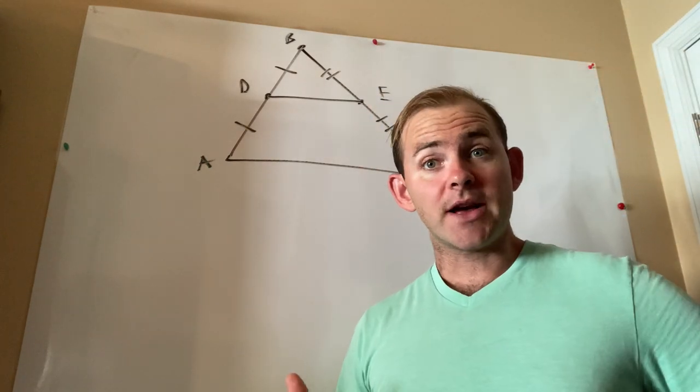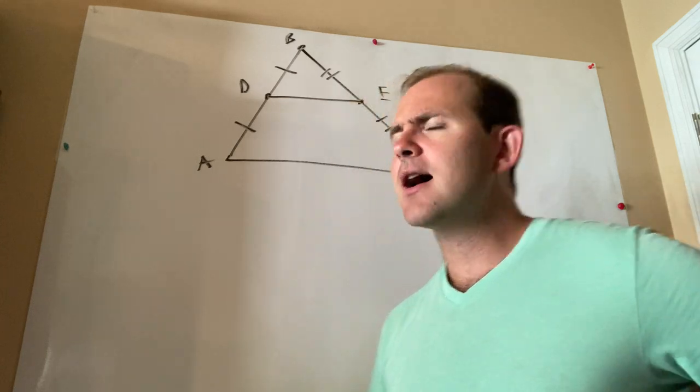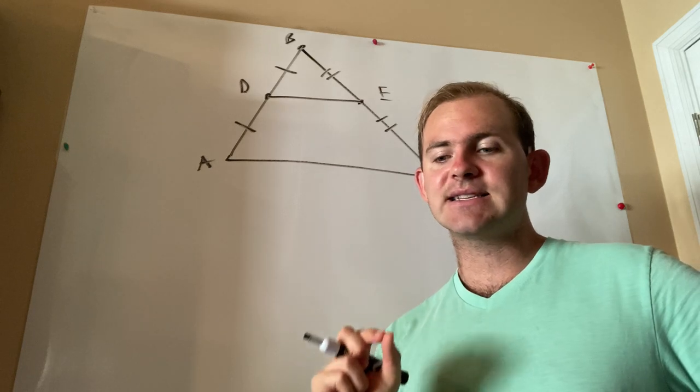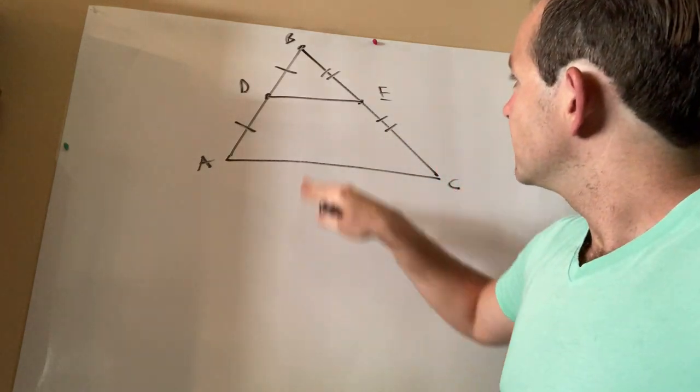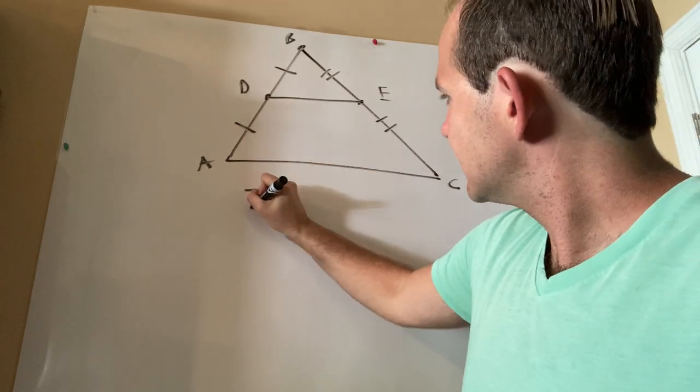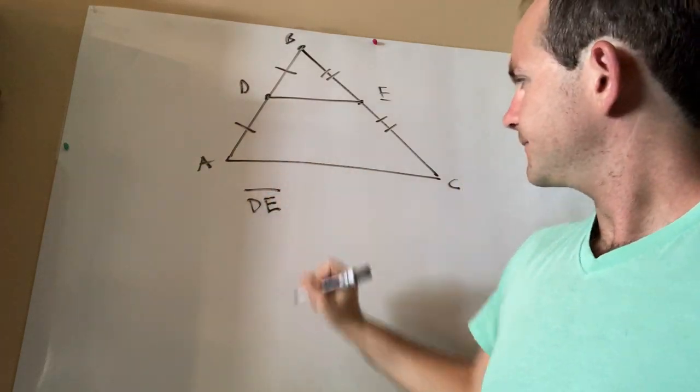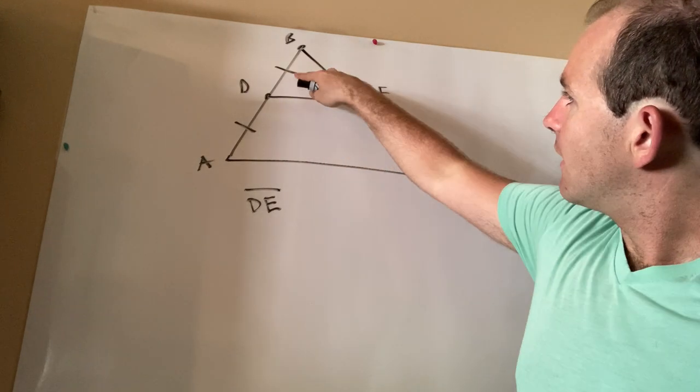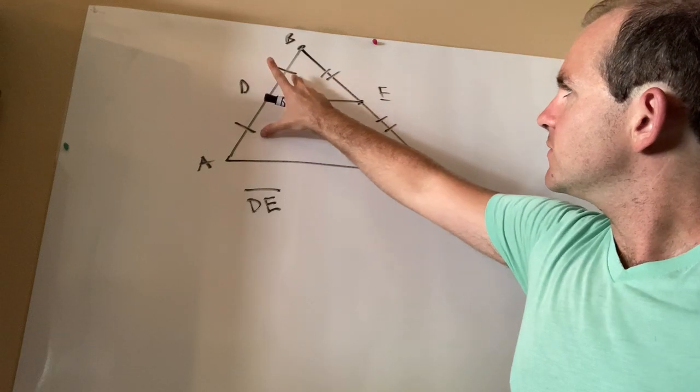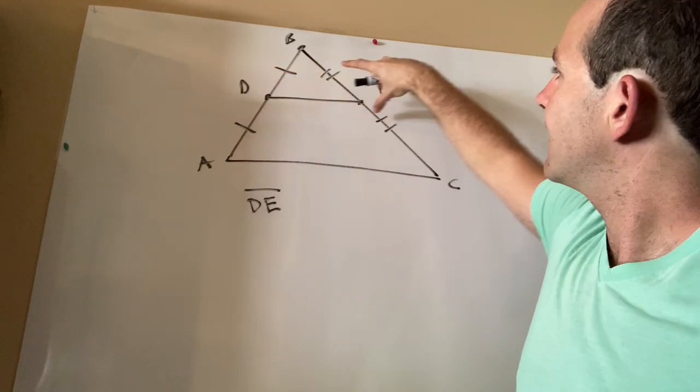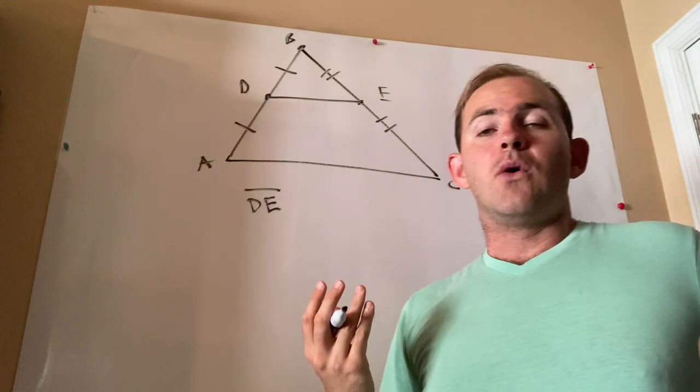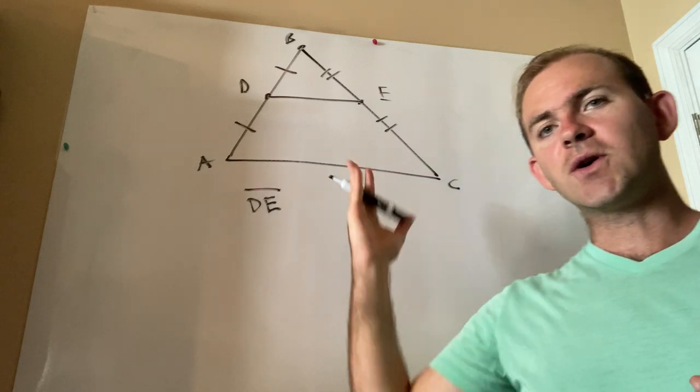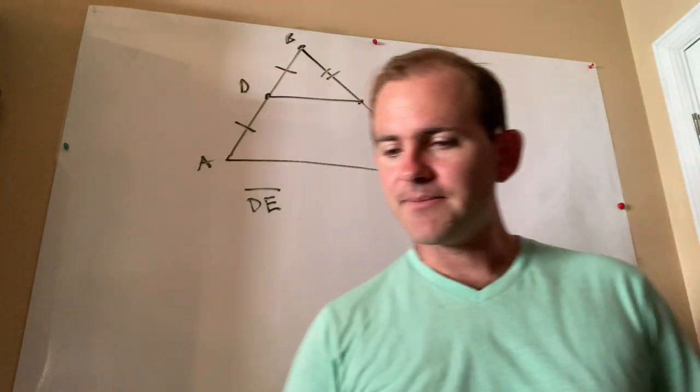We would say that a mid-segment of a triangle is a segment connecting the midpoints. Let me say that again. A segment connecting the midpoints of the two sides. So in this diagram right here, an example of a mid-segment would be DE. The way that I know that DE is a mid-segment is because of these tick marks. These tick marks mean that these two parts are the same as each other, and these two parts are congruent to each other. What does a midpoint do? A midpoint splits a segment into two congruent parts. Therefore, DE is a mid-segment.